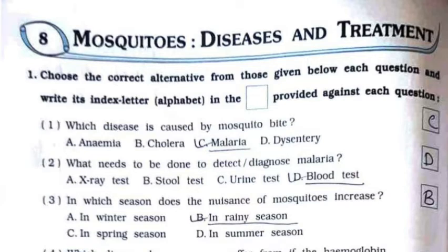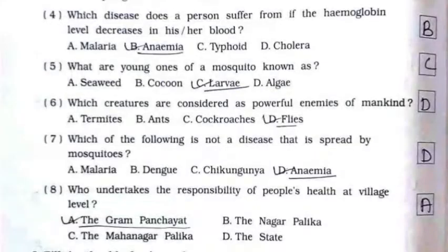First: which disease is caused by a mosquito bite? It's option C: malaria. Second: what needs to be done to detect or diagnose malaria? It's option D: blood test. Third: in which season does the nuisance of mosquitoes increase? It's option B: in the rainy season.